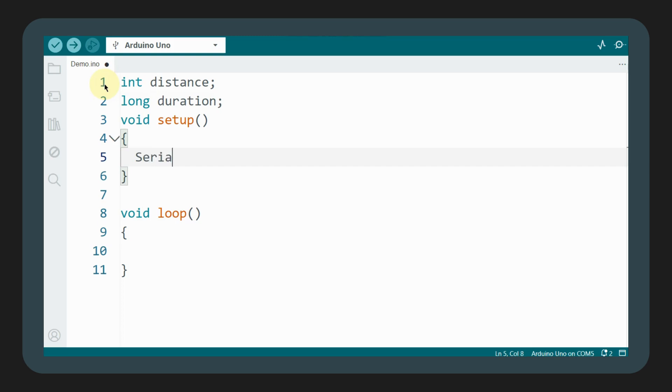In the setup function, we first initialize serial communication and set the baud rate to 9600. Then, we set pin 10, connected to the trigger pin, as an output, and pin 9, connected to the echo pin, as an input.